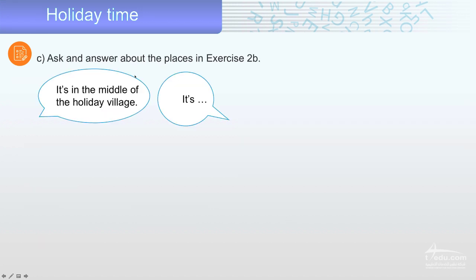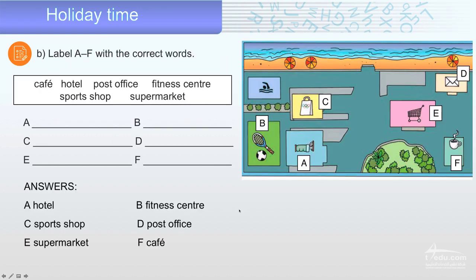Now, ask and answer about the places in exercise 2D. For example, I'll give you an example. It's in the middle of the village or the holiday village. It's what? Example, the middle. What is this? Sports shop. For example, we can say, it's next to the fitness center. What? A, hotel. The hotel. Got it?